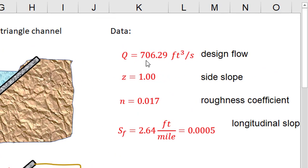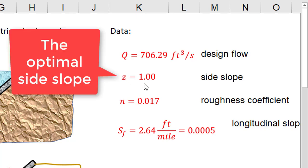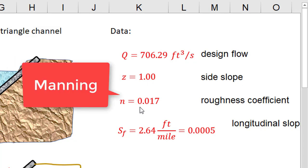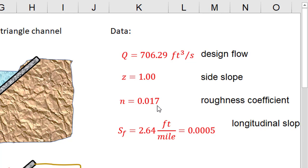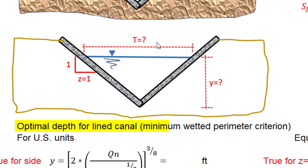A design flow equal to 706.29 cubic feet per second, a side slope equal to 1.00, a roughness coefficient equal to 0.017, and a longitudinal slope equal to 2.64 feet per mile equal to 0.0005. In this video we have to find the top width of the channel and the depth of water.